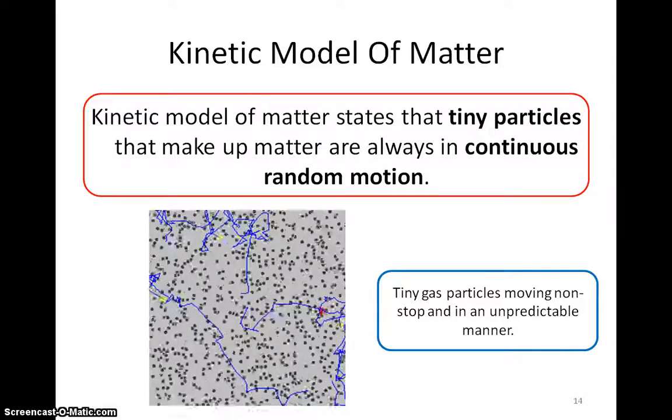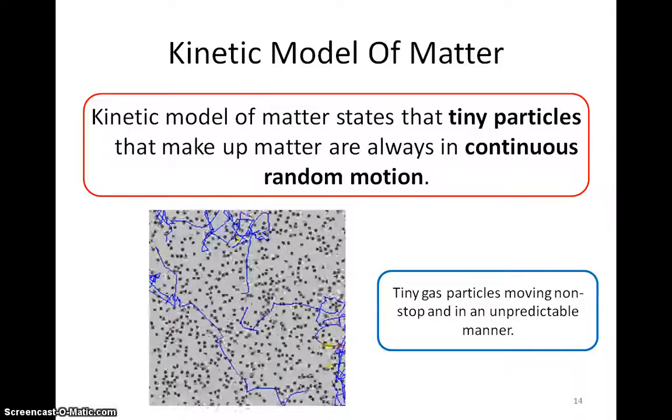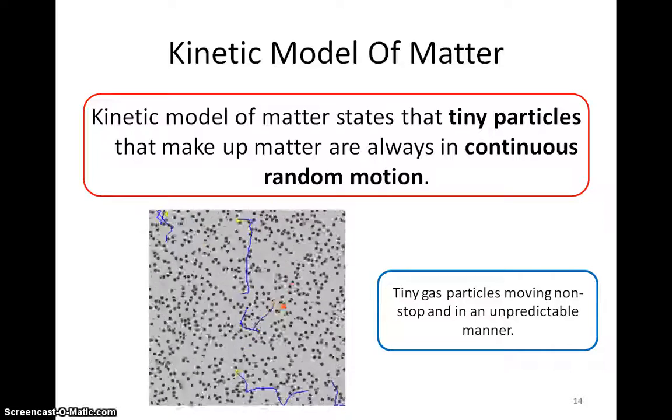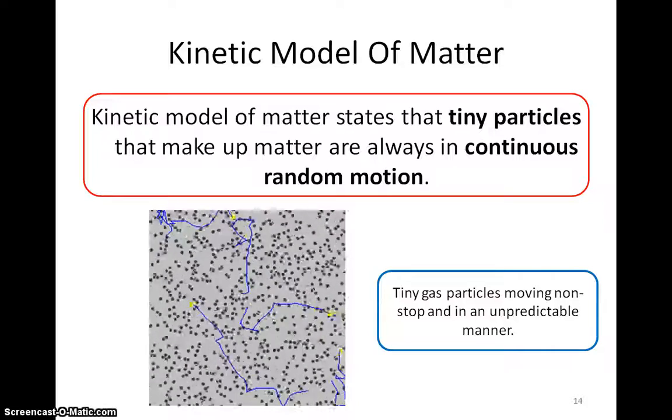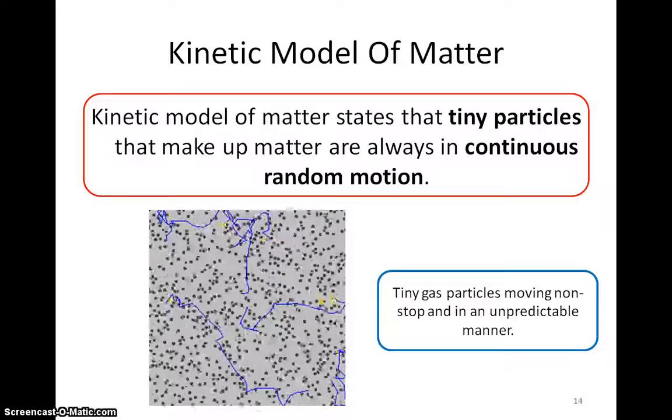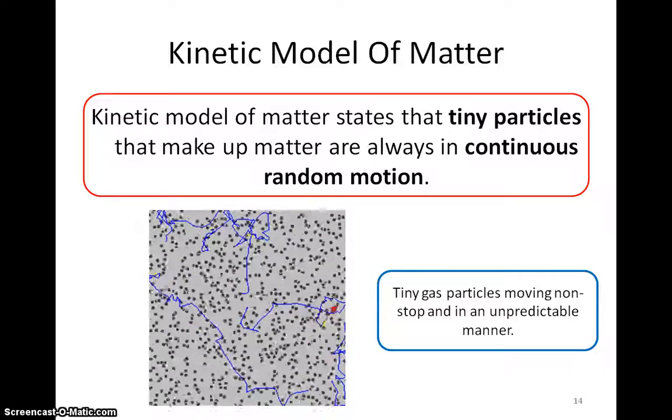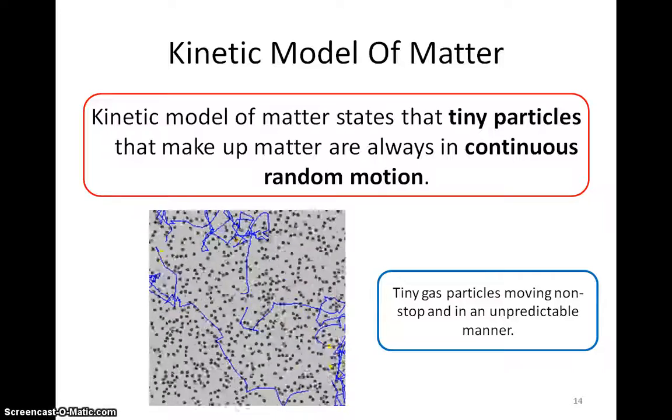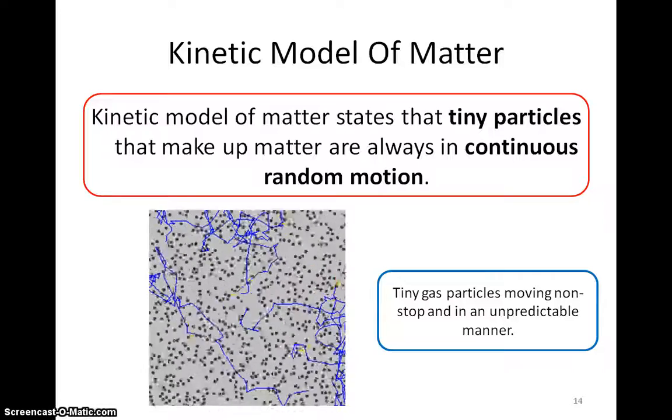Note that there are two parts to this model. The first part of the model states that matter is made up of tiny particles, which we usually call atoms or molecules in chemistry depending on the substance we are looking at. You can see these particles when you use a very powerful microscope.